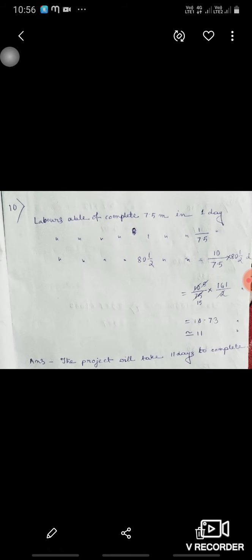Laborer is able to complete 7.5 meter in one day. So for one day, 1 meter, 1 upon 7.5, 51 by 2 means into 80, that will be 10 upon 75 into 161 upon 2. That is approximately 11. That means the project will take 11 days to complete.